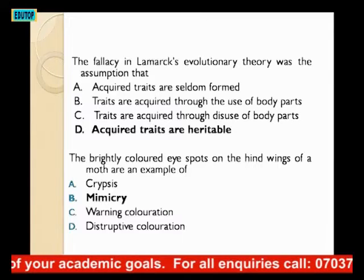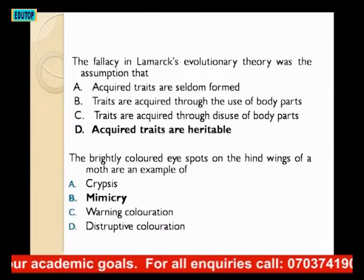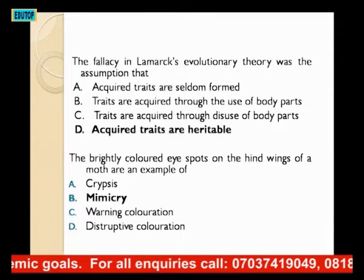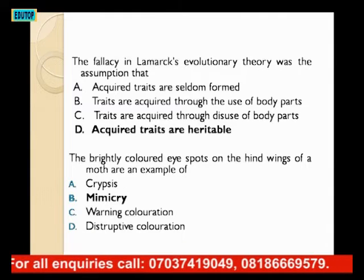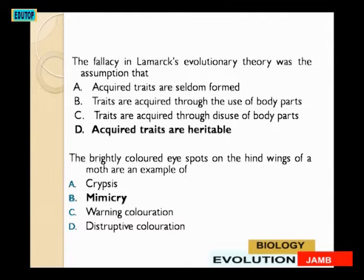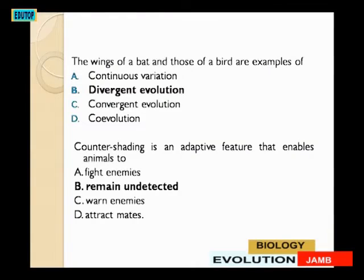The brightly colored eye spots on the hind wings of the moth are an example of what? A: Pricis; B: Mimicry; C: Warning coloration; D: Disruptive coloration. The answer is B — mimicry, trying to mimic something in its environment.